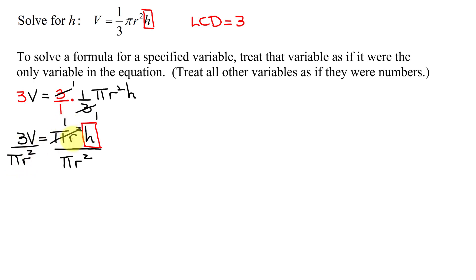This pi r squared reduces with that pi r squared, and on the right-hand side, I just have h, which equals 3v all divided by pi r squared. Or more conventionally, we can write h equals 3v over pi r squared. So I have solved that literal equation or formula for h.